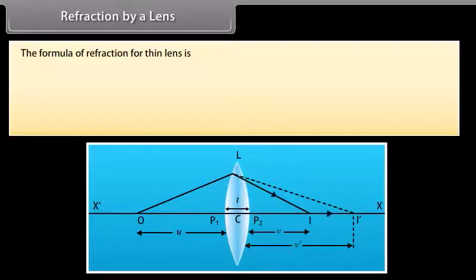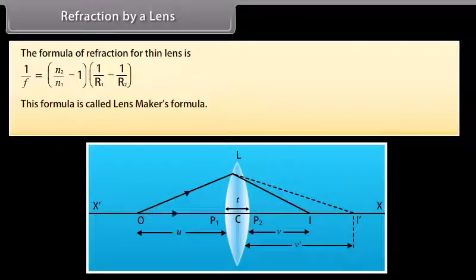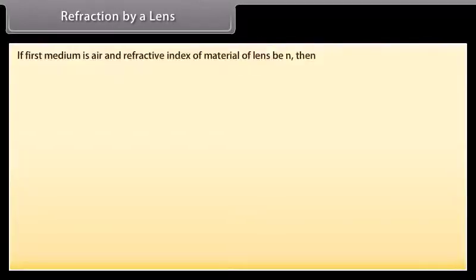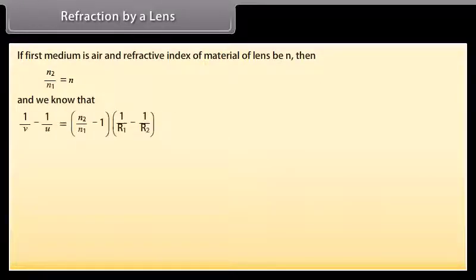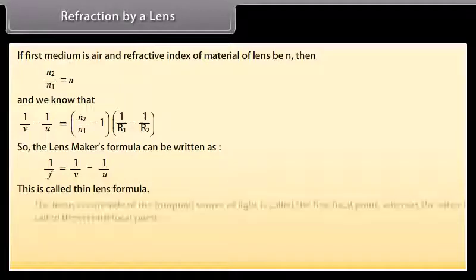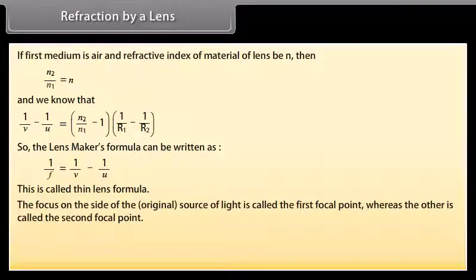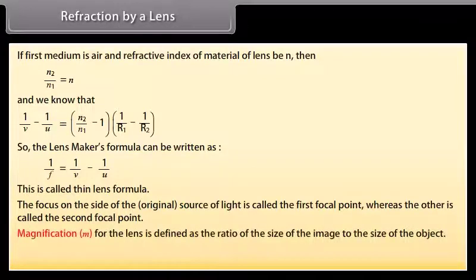The formula of refraction for a thin lens is called the Lens Maker's Formula. This formula also holds for a concave lens. If the first medium is air and the refractive index of the material of the lens is N, then N2/N1 = N. The lens maker's formula can then be written as the thin lens formula. The focus on the side of the source of light is the first focal point; the other is the second focal point. Magnification M is defined as the ratio of image size to object size: M = H′/H = V/U.